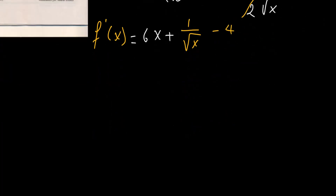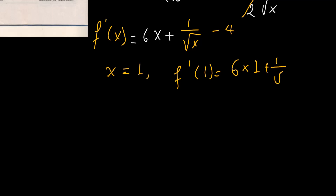So we have the formula. We only need to substitute x equal to 1. So f derivative at 1 will be 6 times 1 plus 1 over square root of 1 minus 4. So 6 times 1 is 6, and 1 over square root of 1 is 1. So 6 plus 1 is 7, and 7 minus 4 will be 3.